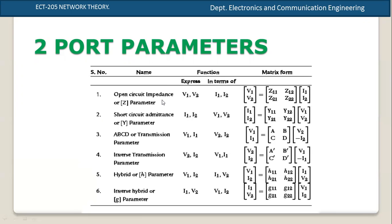The impedance parameter expresses V1 and V2 in terms of I1 and I2. So V1 is equal to Z11·I1 plus Z12·I2. Then V2 is equal to Z21·I1 plus Z22·I2. So here are the four Z parameters.